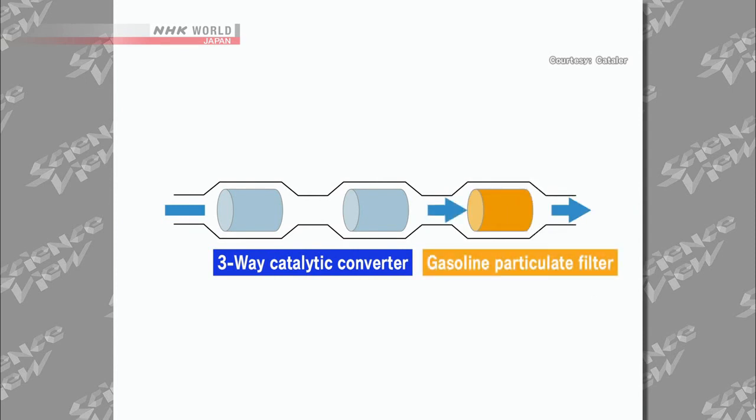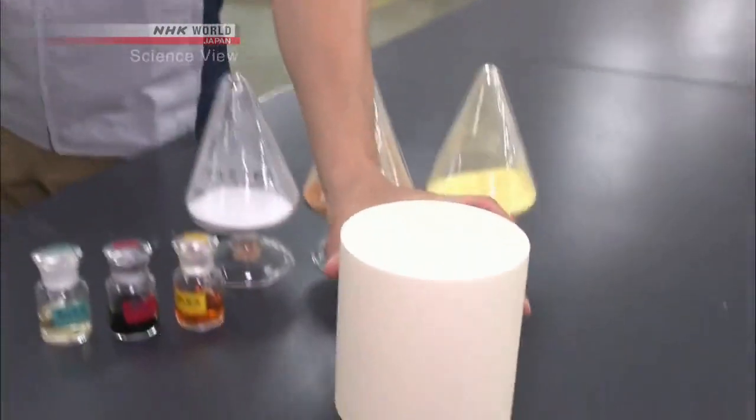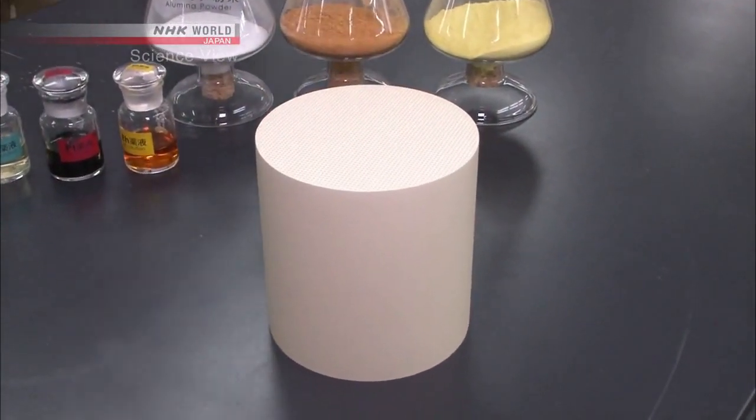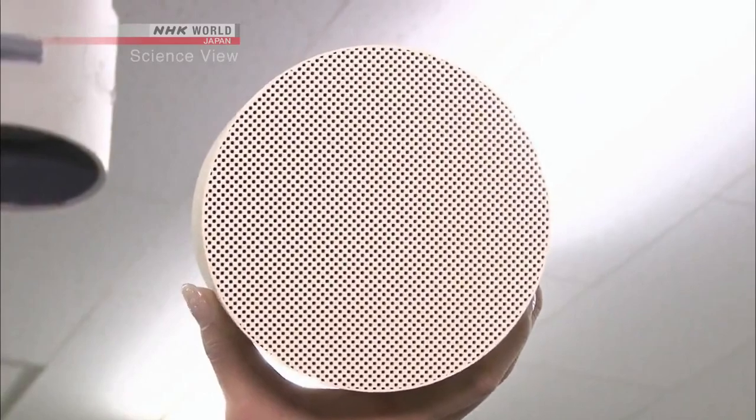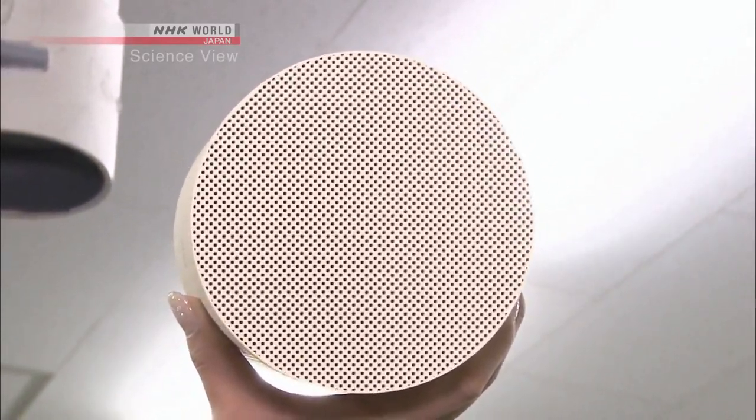But with more filters, problems such as engines losing power would occur. Ori and his group developed a filter that would solve the problem. This is the filter. It is more finely meshed than before and has the ability to remove fine particles while functioning with the same efficiency as the conventional catalytic converter.